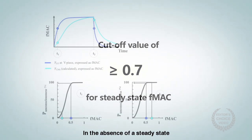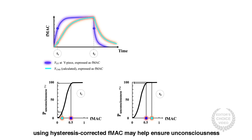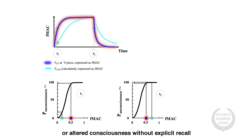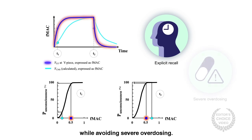In the absence of a steady-state, using hysteresis-corrected FMAC may help ensure unconsciousness or altered consciousness without explicit recall — the most critical requirements of general anesthesia — while avoiding severe overdosing.